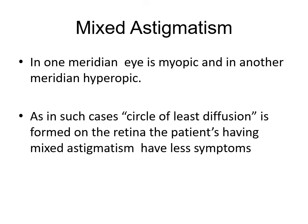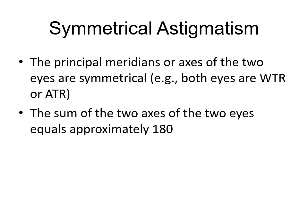In mixed astigmatism, one meridian is myopic and the other is hypermetropic. Mixed astigmatism patients generally have fewer complaints because the circle of least diffusion is formed on the retina, so their vision is comparatively less affected and they can adjust more easily.